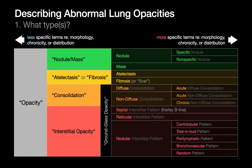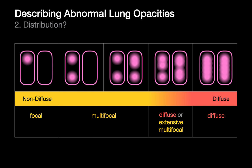So we describe what type of opacity we're looking at, and we also want to describe its distribution. In general terms, is it diffuse — meaning symmetric and bilateral — or is it non-diffuse, meaning there are areas of sparing and areas of involvement scattered around? We can be more detailed: focal, multifocal, versus diffuse. These words help us describe distribution, which can be informative when constructing a good differential diagnosis.